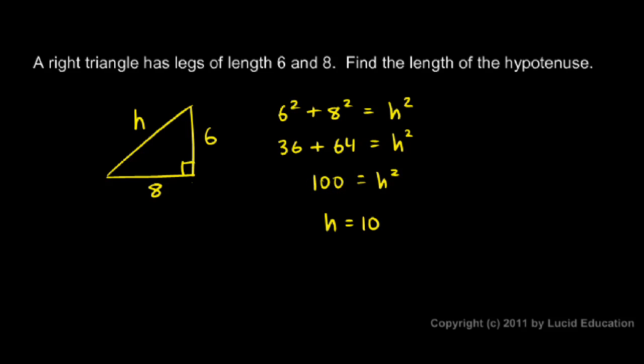So we found the length of the hypotenuse, 10. And we've also found another Pythagorean triple: six, eight, ten.